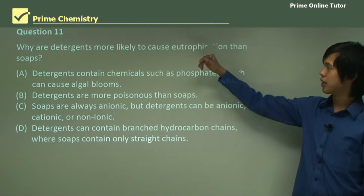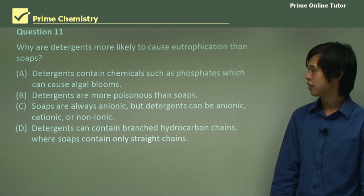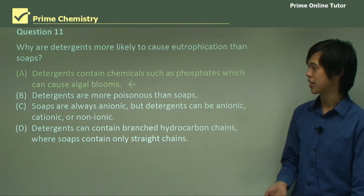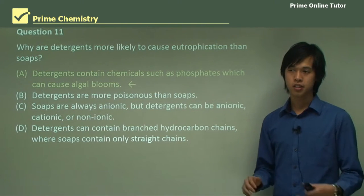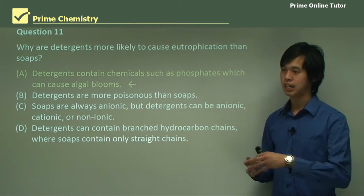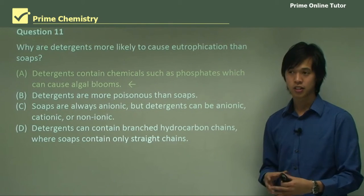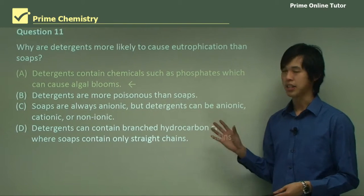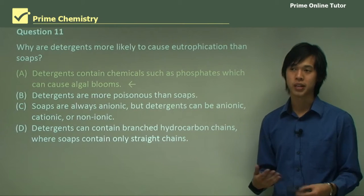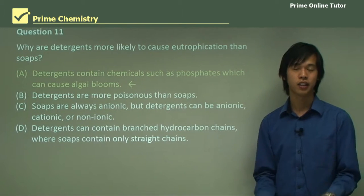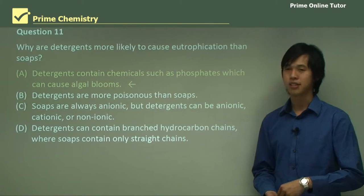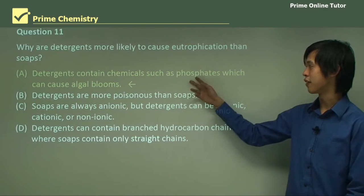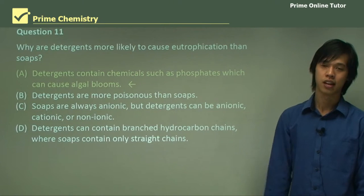Why are detergents more likely to cause eutrophication than soaps? Detergents contain chemicals such as phosphates, which can cause algal blooms. Soaps rarely contain phosphates because they're made from fatty acids like stearic acid — so they don't have phosphate, which means they can't fertilize algae and can't form an algal bloom. Whereas synthetic detergents contain phosphates and thus can cause algal blooms.